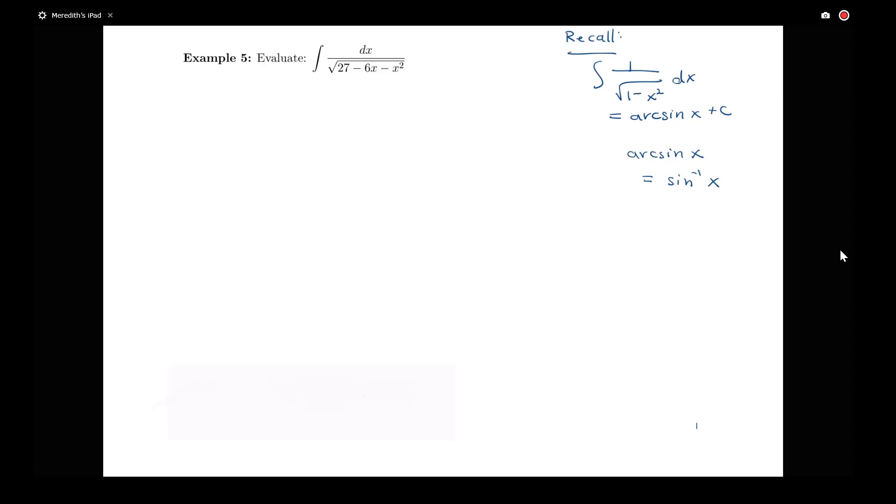Just remember that when we write arc sine of x, this is the same thing as when I write sine with the negative 1 there. That means the inverse sine. Arc sine and sine inverse then are the same functions. They're the ones that undo the sine functions, the inverse of the sine function. So maybe what I have here could somehow be at some sort of arc sine. So let's see how we can use completing the square to figure this out.